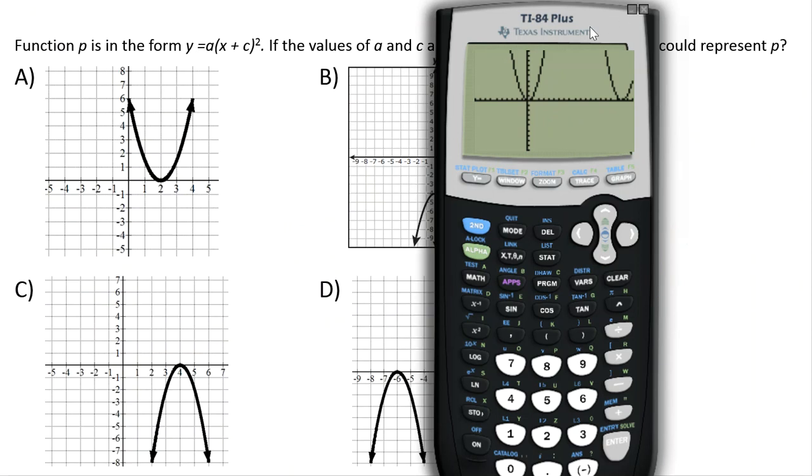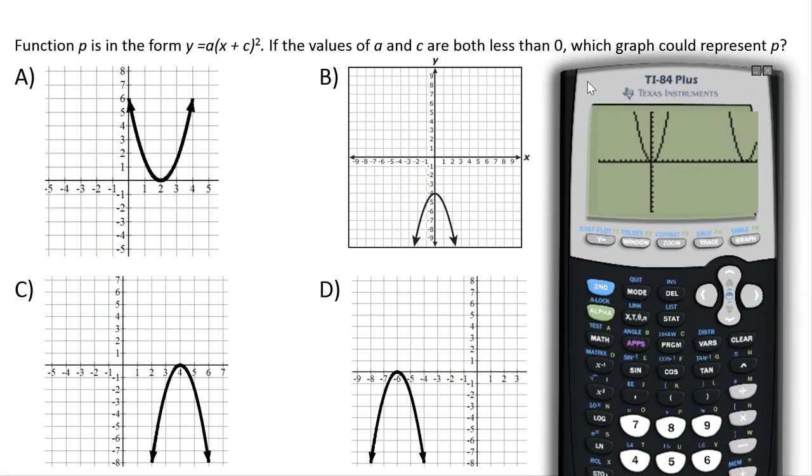Okay, our last type of problem for this particular video is right here. Function p is in the form y equals a(x + c) squared. What? There's no numbers there. They're just all letters except for the exponent of 2. And then it tells us the values of a and c are both less than 0. Which graph could represent p? Wow, this is a little bit weird. Somehow we're supposed to end up with a graph that matches this description, but we don't have any numbers.